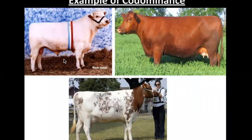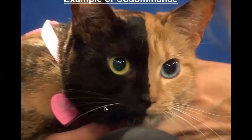Other examples of codominance include white and brown coloring appearing in patches, and tabby and black coat patterns.